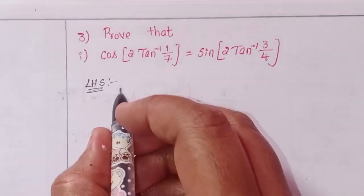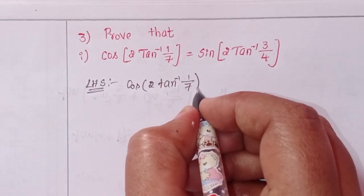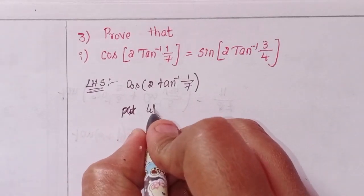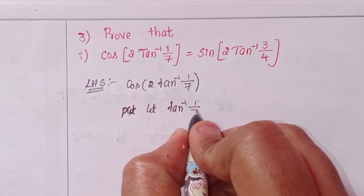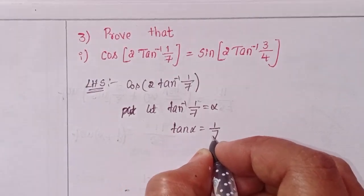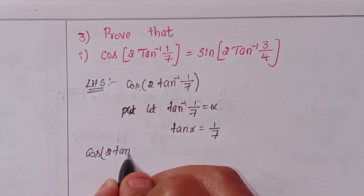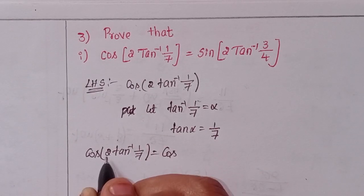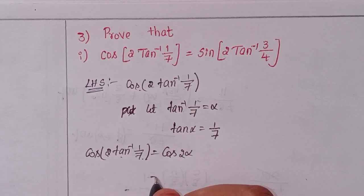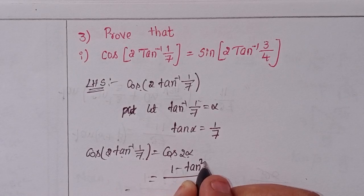First, I will take LHS: cos of 2 into tan inverse 1 by 7. Let tan inverse 1 by 7 equal to alpha, that means tan alpha equals 1 by 7. Substituting, cos of 2 into tan inverse 1 by 7 equals cos 2 alpha. Using the formula: cos 2 alpha in terms of tan equals 1 minus tan square alpha by 1 plus tan square alpha.